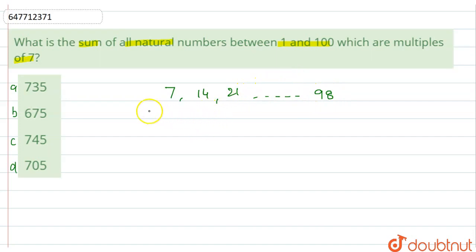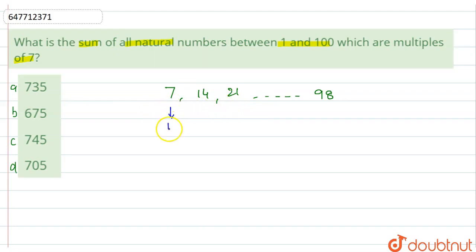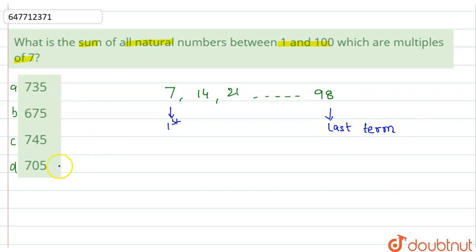यहाँ पर देख सकते हैं कि यह arithmetic progression का question है, क्योंकि यह arithmetic progression के तरीके से जा रहा है: 7, 14, 21. तो हमने यहाँ पर find कर लिया कि first term 7 है और last term 98 है. ये दो चीज़ें हमें मिल गईं.